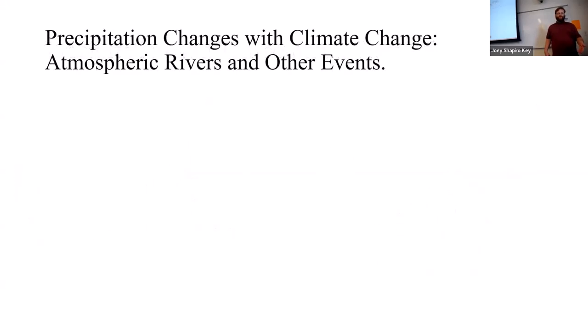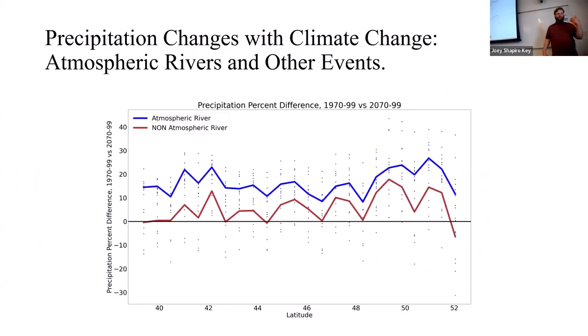We also wanted to see if there were more atmospheric river events with climate change than before. To do this, we compared one given model's results between 1970 and 1999 before climate change, and 2070 and 2099 after climate change, and we came up with this plot, which shows the percent difference in precipitation between those two types of events. You can see that atmospheric rivers seem to increase somewhat in precipitation between about 15 to 25 percent after climate change than before, while non-atmospheric river events generally stay quite flat. This told us that these climate change effects are primarily limited to atmospheric rivers due to their intense precipitation.